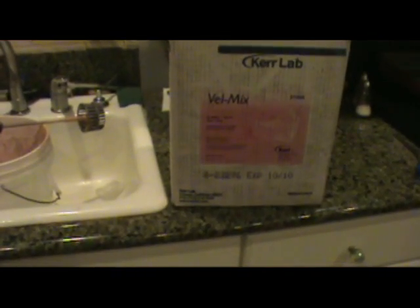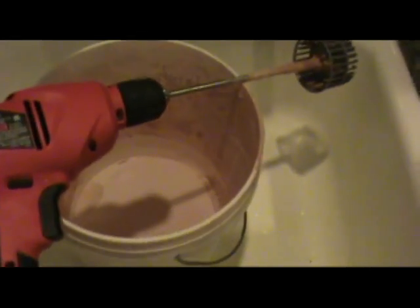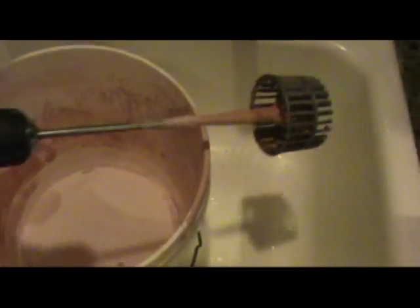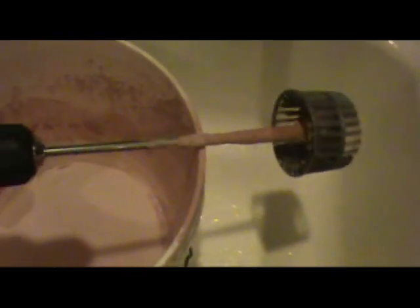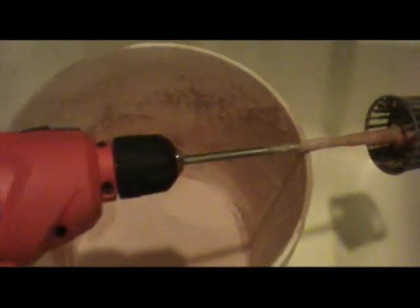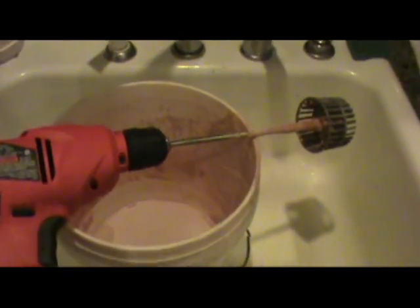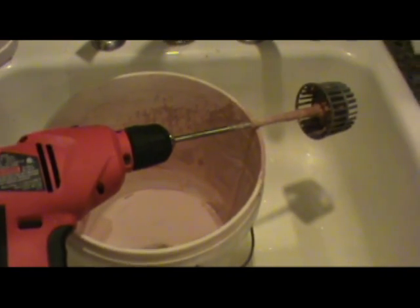Now I'm ready to mix up the plaster to make this plaster and tile tool. Start with Velomix Pink from Kerr. Very good product. The only thing I use. I'm going to put it in a bucket here in the sink. Mix it up with the paint mixer and then pour it into our form that we made before.